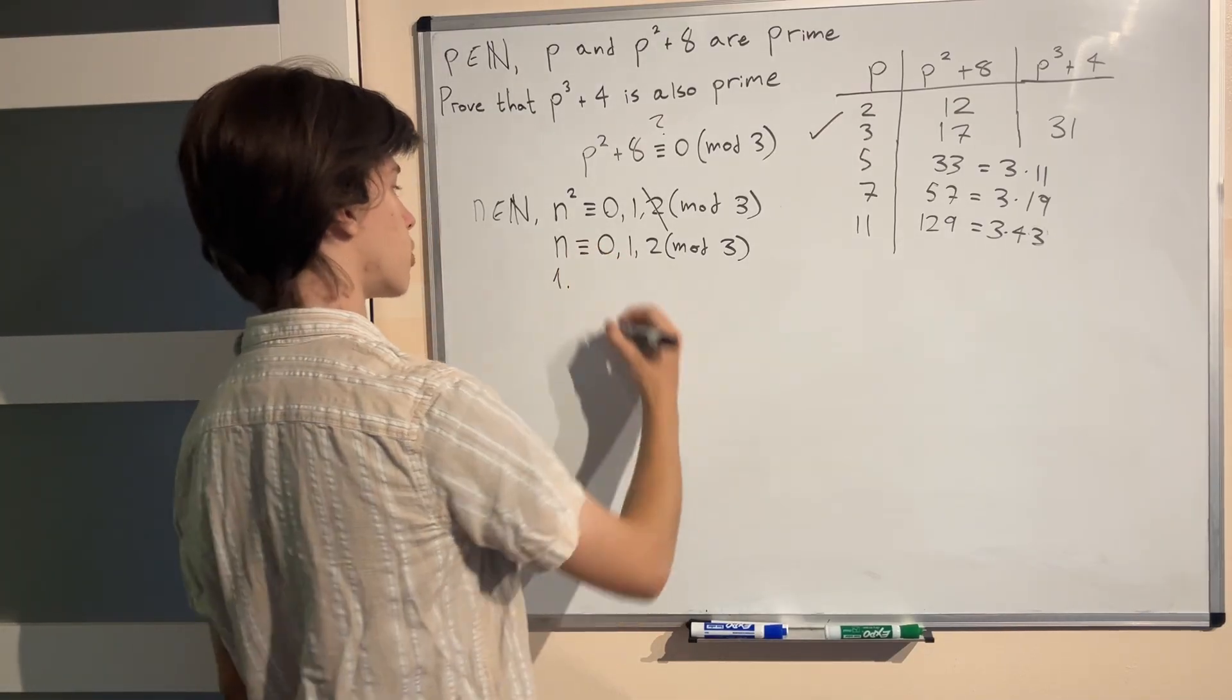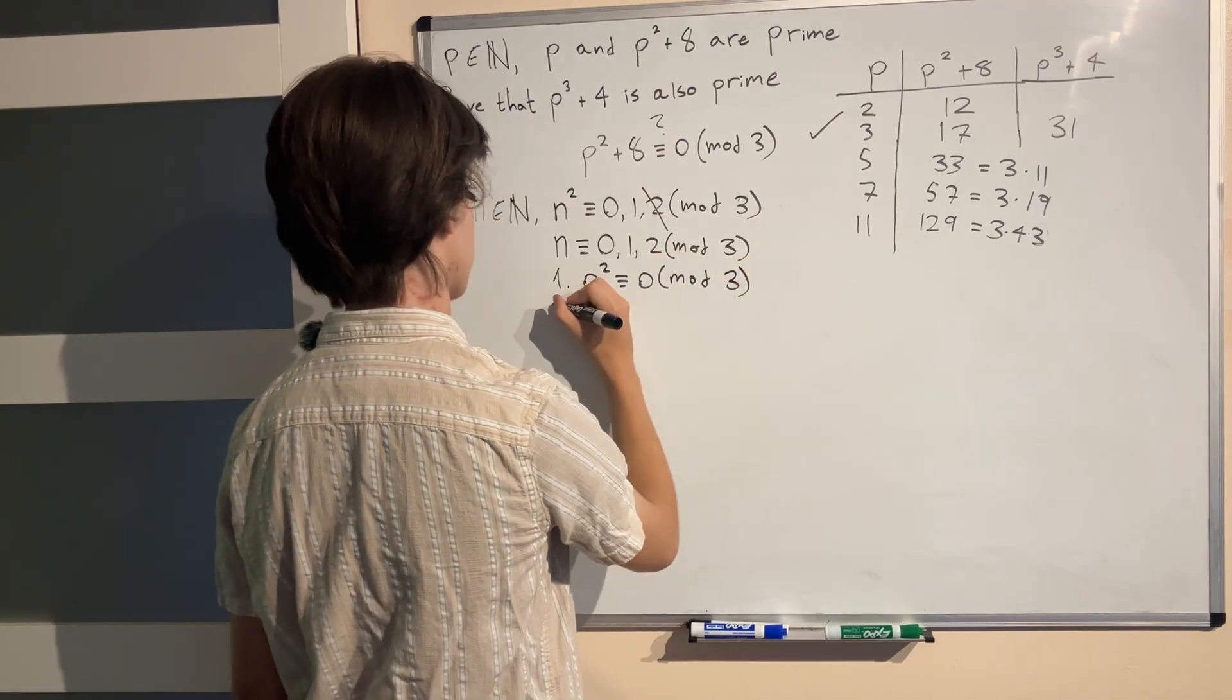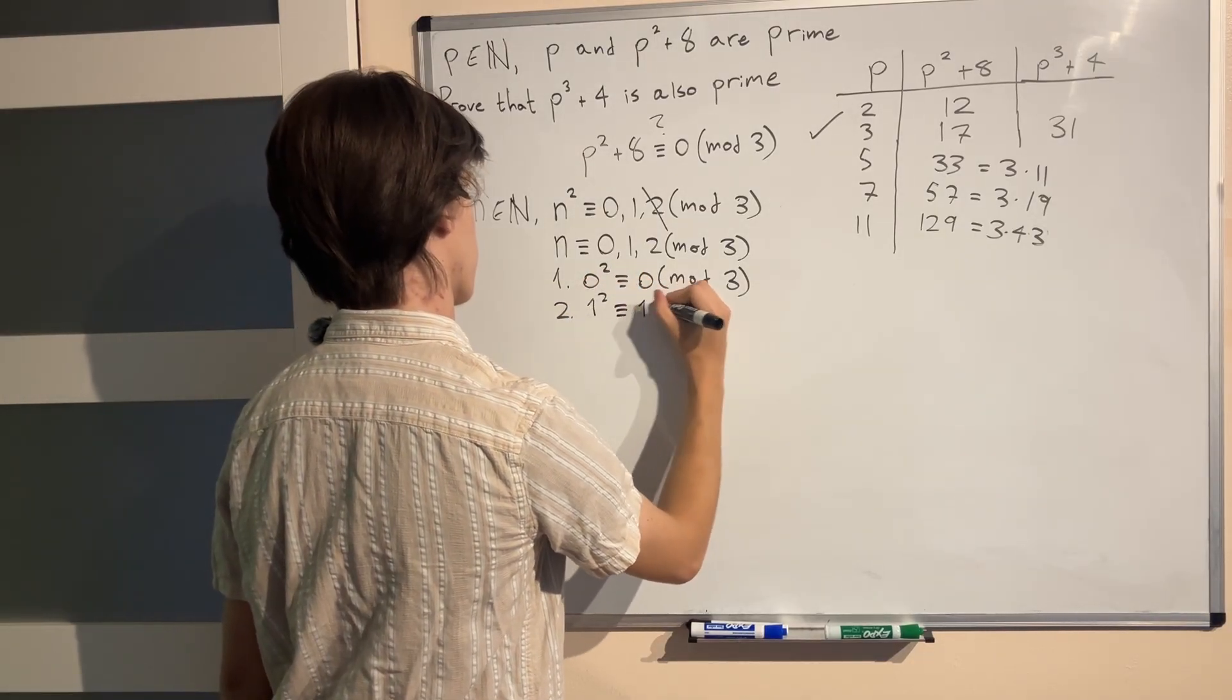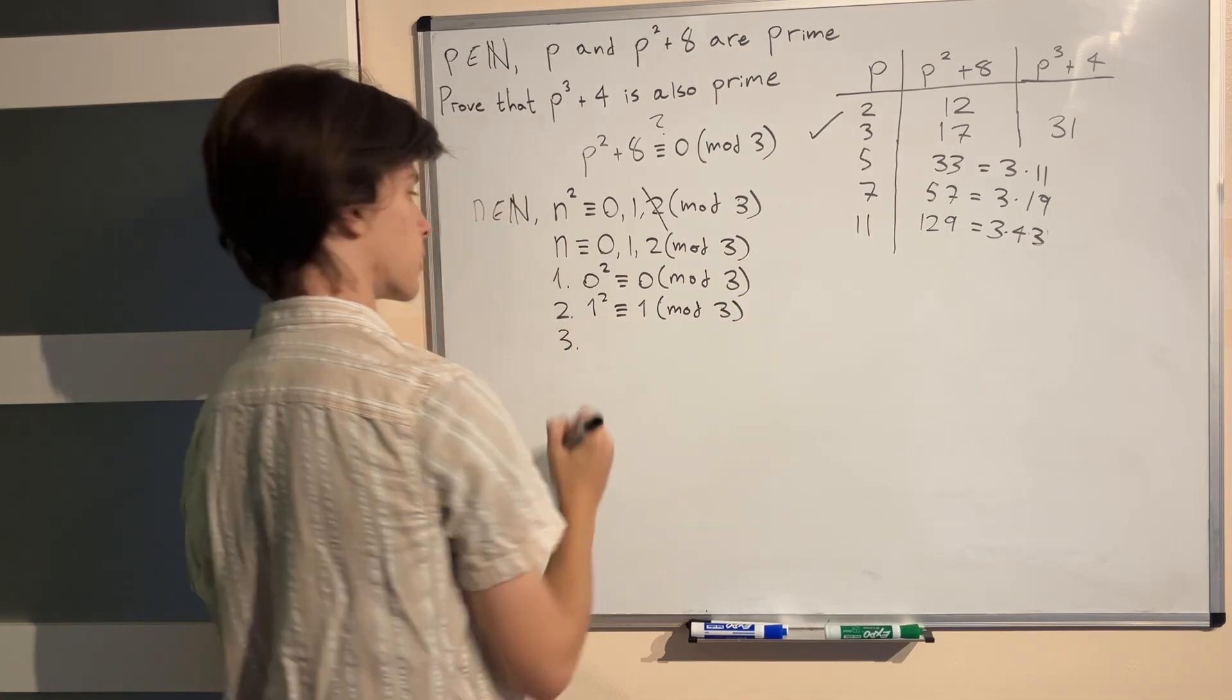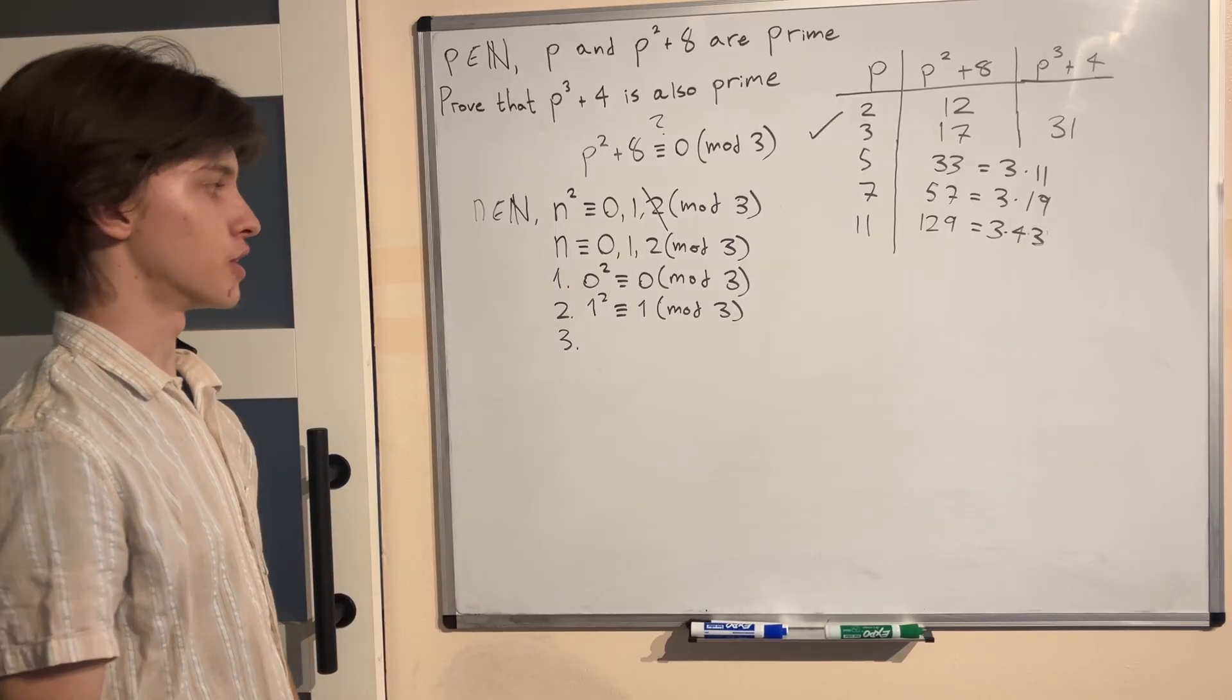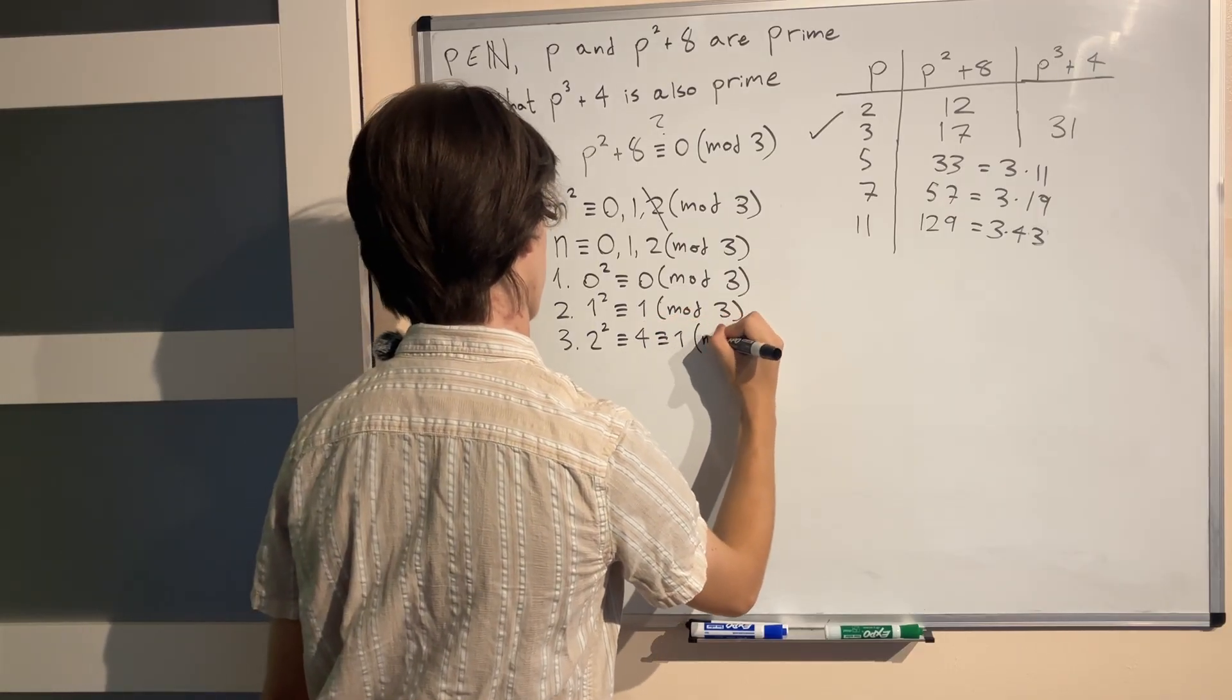For the first case when n is 0, 0² that's congruent to 0 in mod 3. No questions. For the second case when n is congruent to 1 in mod 3, 1² is 1. No questions. And for the third case when n is congruent to 2 mod 3, n² will not be congruent to 2 mod 3 but will be congruent to 2² which is 4 and which is 1 in mod 3.